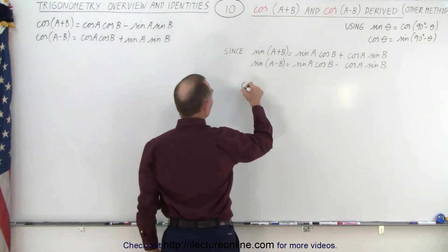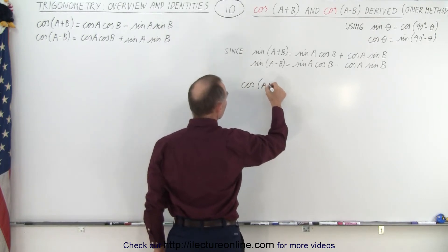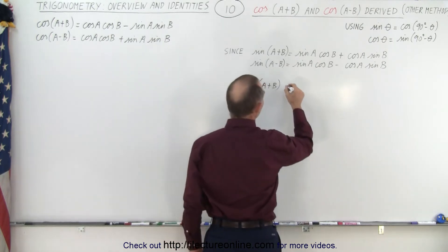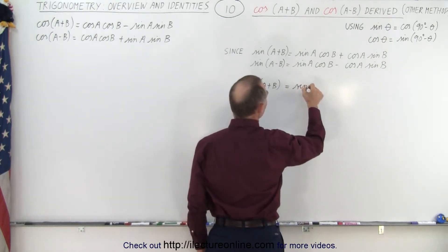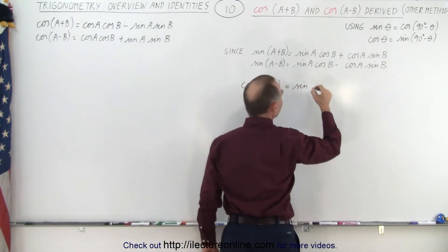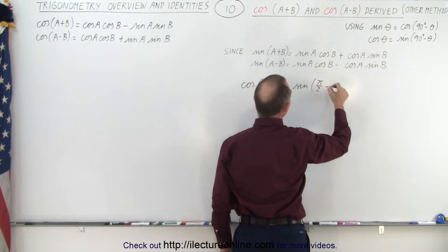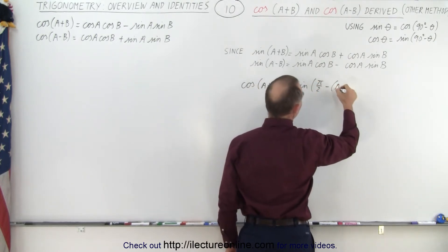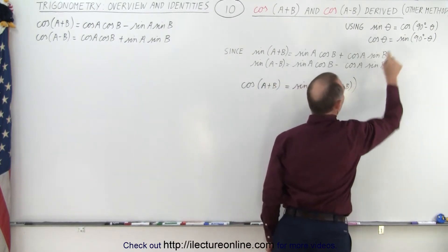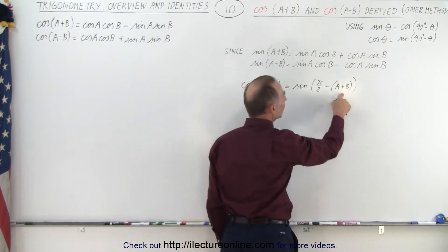Let's start with the cosine of a plus b. We can say that this must be equal to the sine of 90 degrees — which is pi over 2 — minus (a plus b). Here we simply use this relationship: the cosine of an angle is equal to the sine of 90 degrees minus that angle.